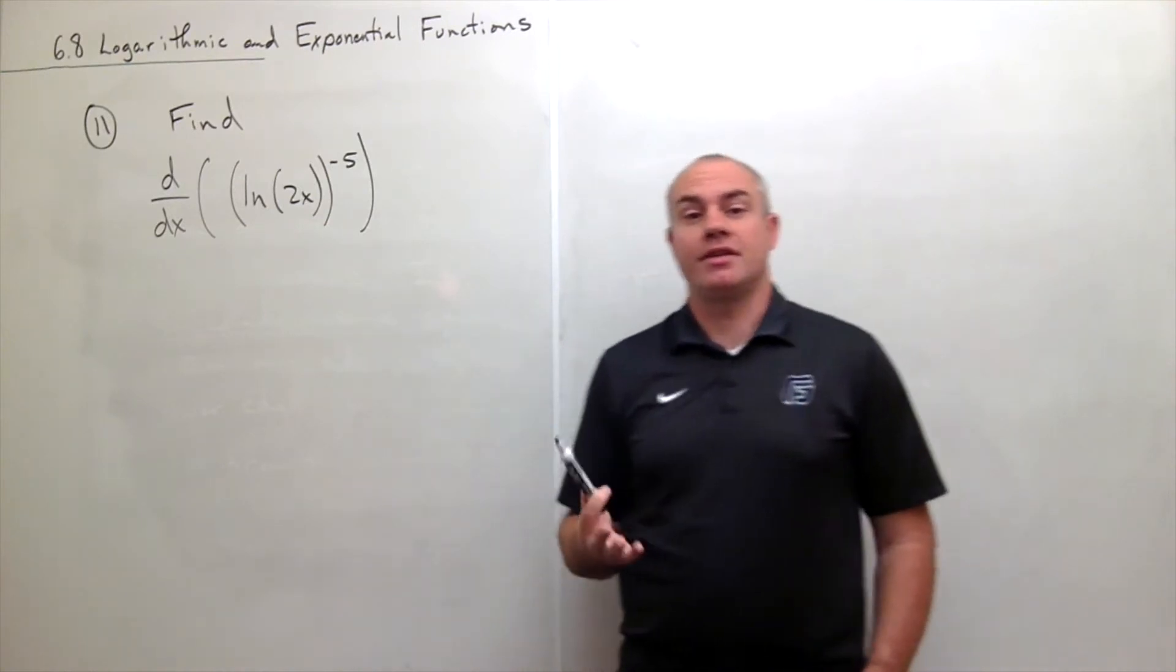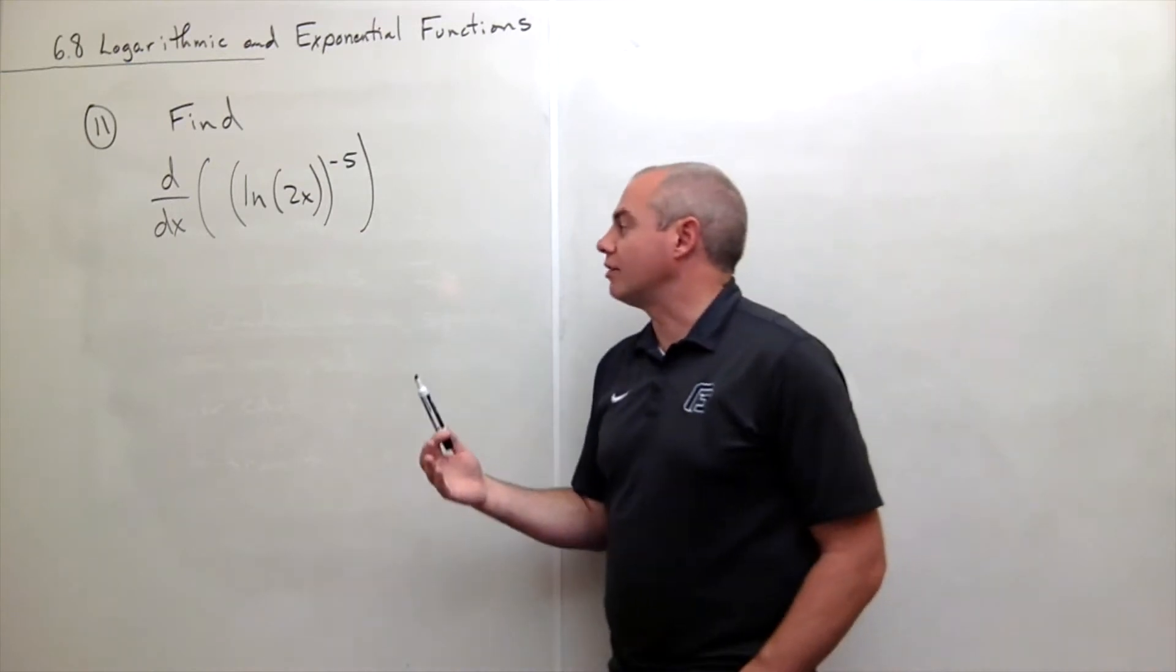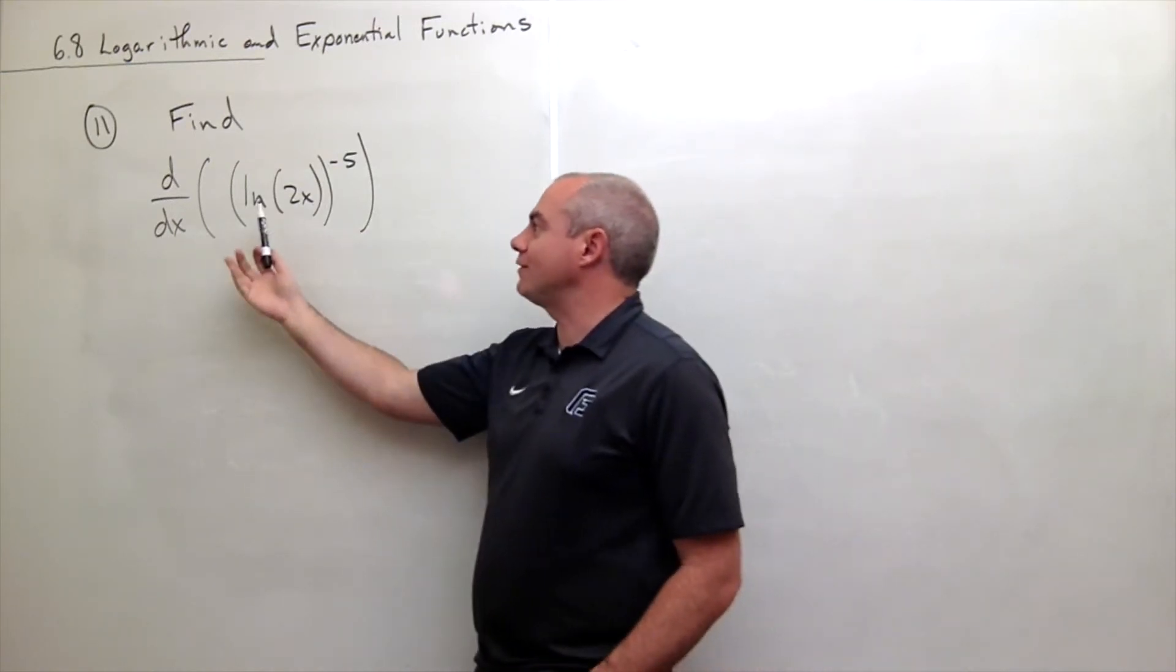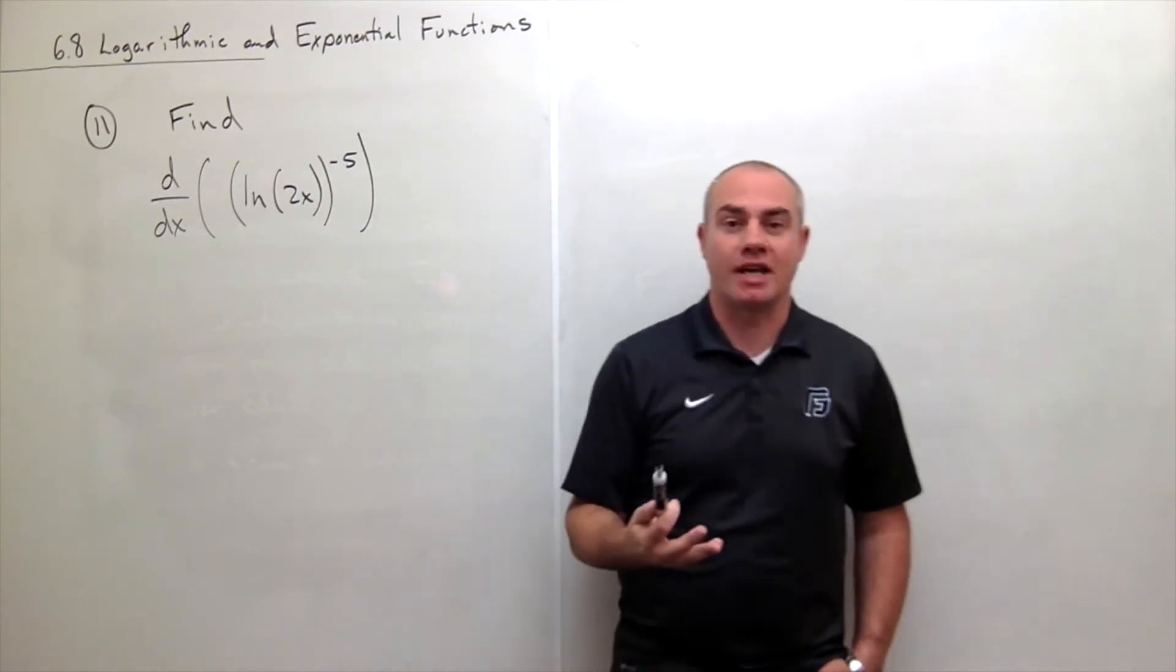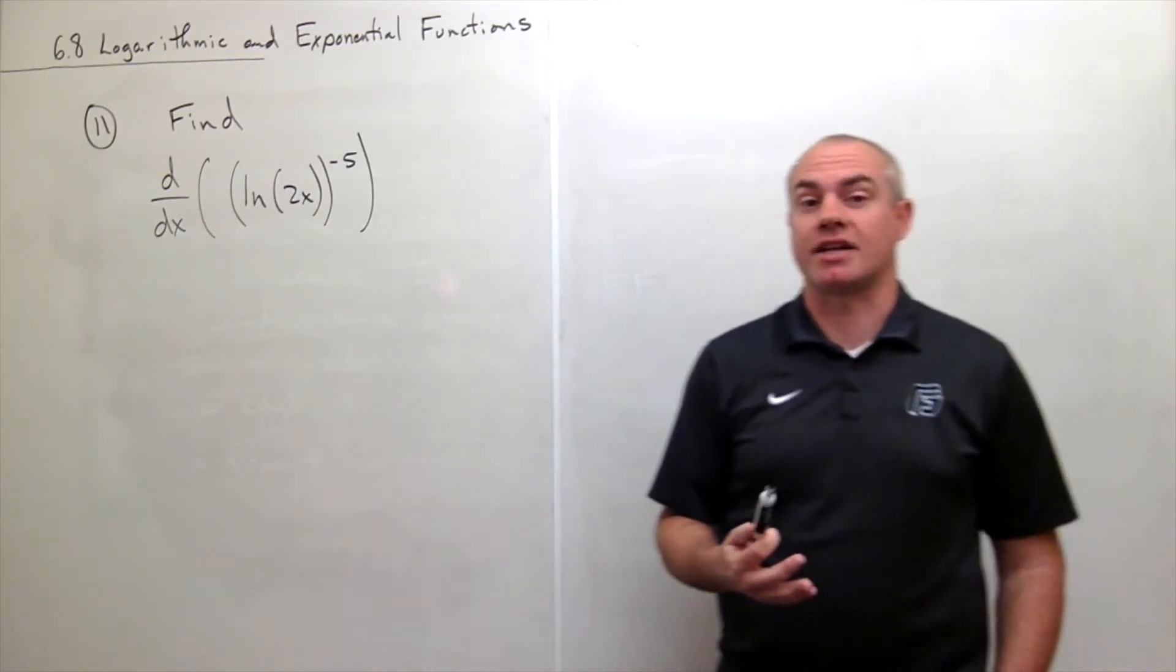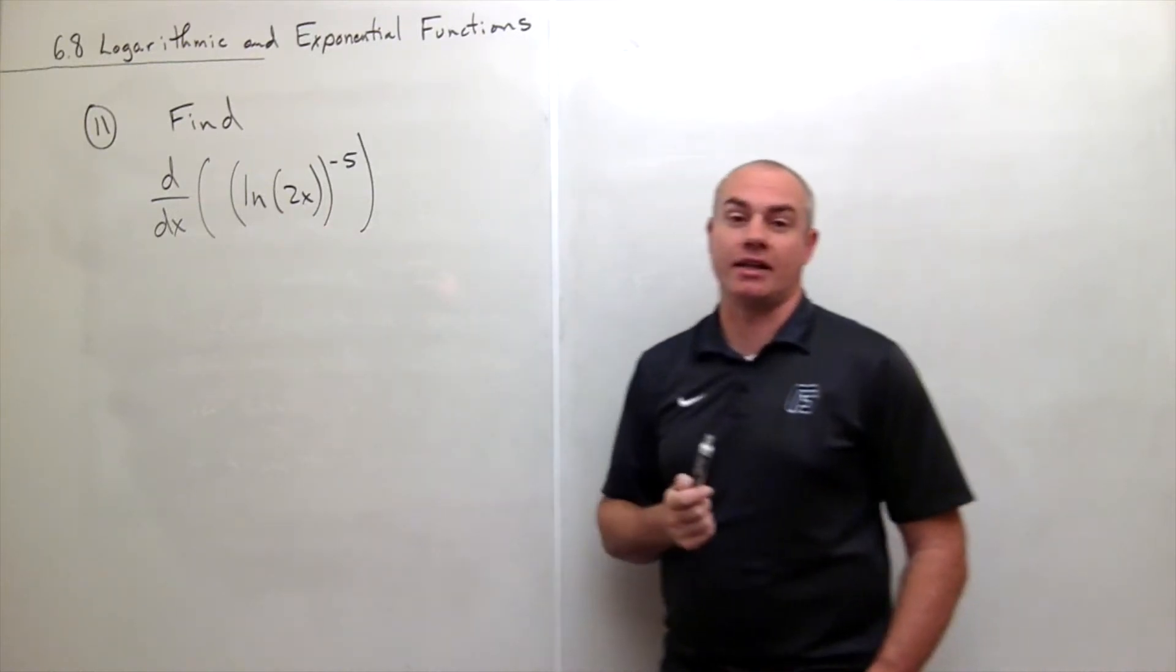All right, so this is a chain rule problem. All of these problems that I'll be doing are just problems that have to do with exponential functions and logarithmic functions, taking their derivatives and taking their anti-derivatives. Here we want to take the derivative of something that involves an ln.